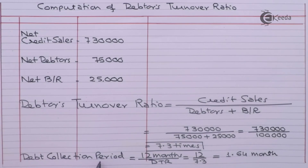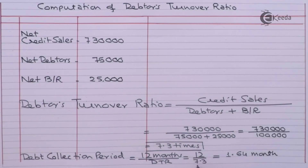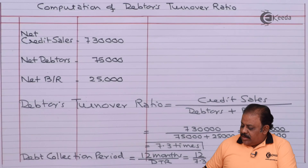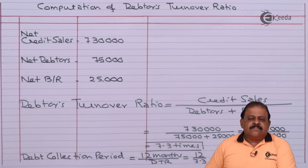Average debt collection period equals 12 months divided by debtors turnover ratio. We can get the average collection period on a monthly basis: 12 divided by 7.3 equals 1.64 months. This means on an average debtors are collected within a period of 1.64 months.